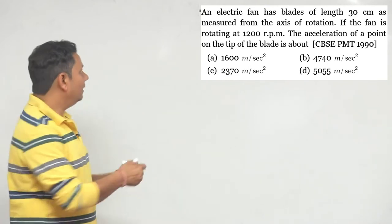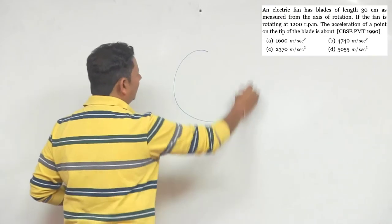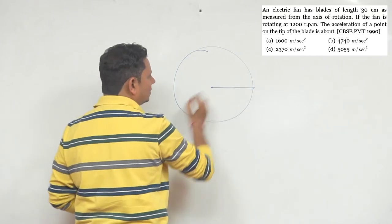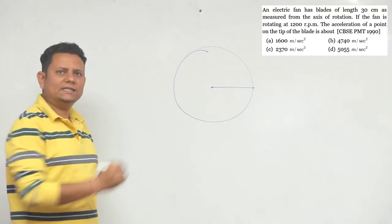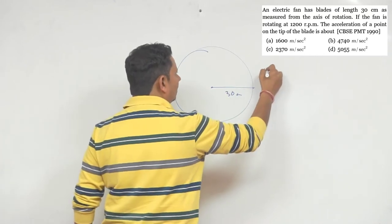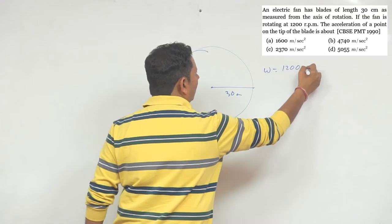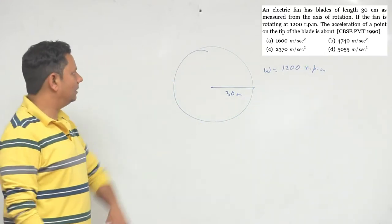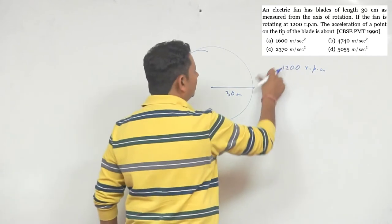In this case, if you have a particular circular motion, from the axis of rotation the distance is 30 centimeters, and this rotation is 1200 rpm, rotation per minute. This is not omega; this is our frequency. 1200 rpm is angular speed.